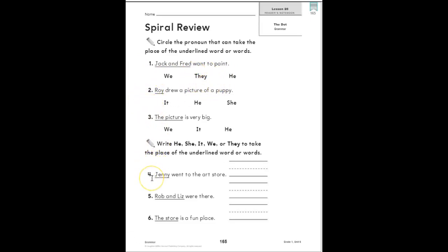And then for four, five, and six, you're going to write he, she, it, we, or they to take the place of the underlined word or words. This time they're not giving you one to circle - you get to choose one and write it on the line. So Jenny went to the art store.